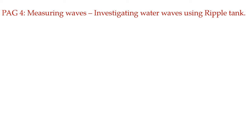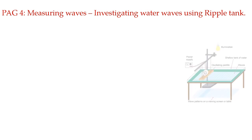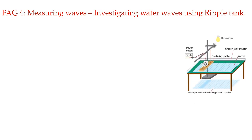The fourth PAG is about measuring waves — investigating water waves using a ripple tank. You have already studied the wave equation, which tells you that wave speed is equal to frequency times wavelength. Using the ripple tank setup, we will set up water waves, and once the waves are clearly seen, we will first find their wavelength, then the frequency, and then multiply both to give the speed.